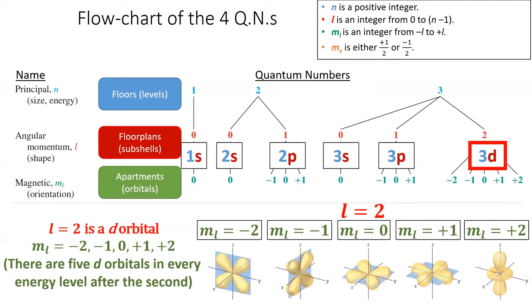Starting in the third energy level, l can equal two. When l equals two, we have a d orbital. Think of d for redonk, because these are when the orbitals start to look really kind of strange. There are five different orientations of d orbital, corresponding to magnetic quantum numbers from negative two to positive two. The d orbitals of the third energy level are named the 3d orbitals.